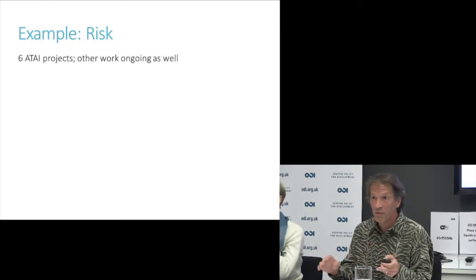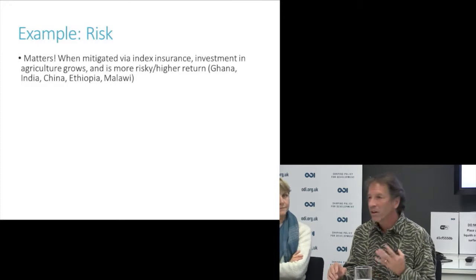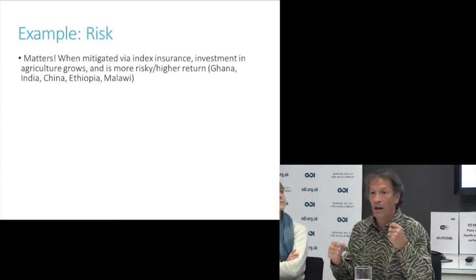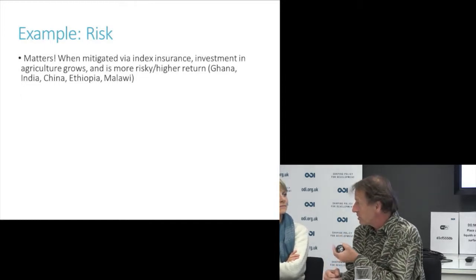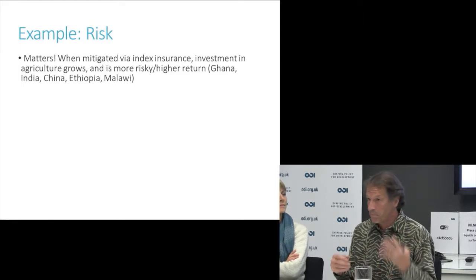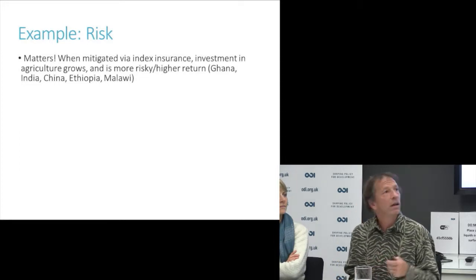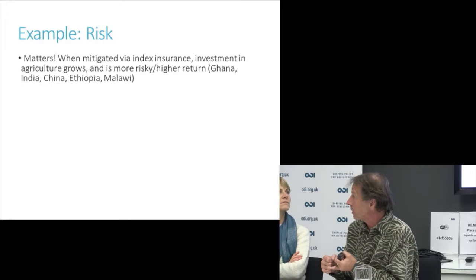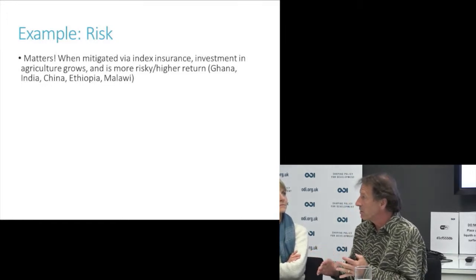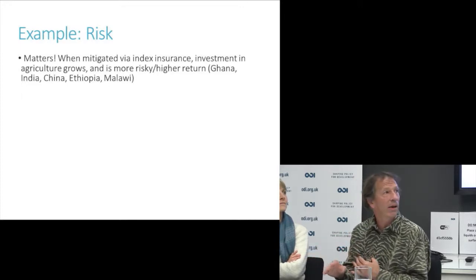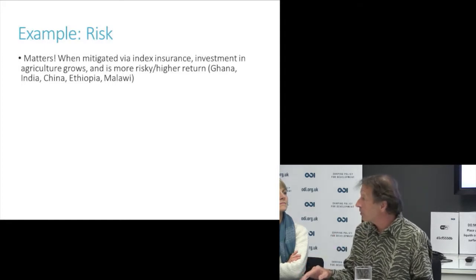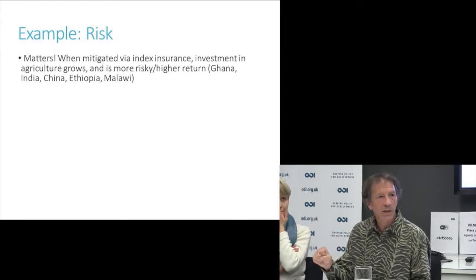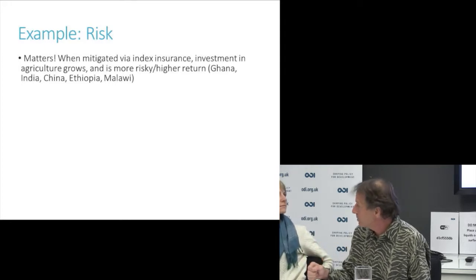The conclusion from looking at the risk literature is: yes, risk matters. Farmers face a very uncertain environment with virtually no irrigation, so they're dealing with rainfall risk, and it affects investment decisions. We know this through randomized control trials in which certain farmers are given access to improved insurance markets — in particular, weather index insurance markets. When farmers get access to that, they invest more in agriculture and in riskier, higher-return agriculture. We see imperfect insurance against risk mattering for farmer adoption of new technology, like intensified use of fertilizer.